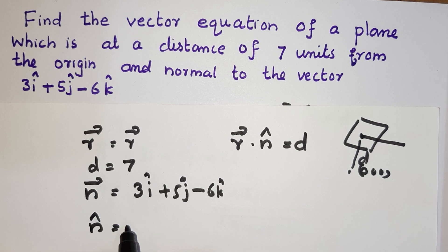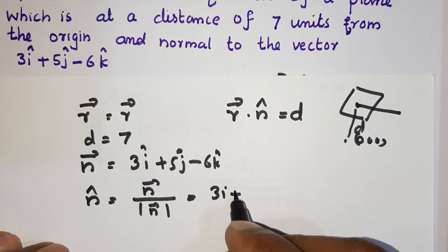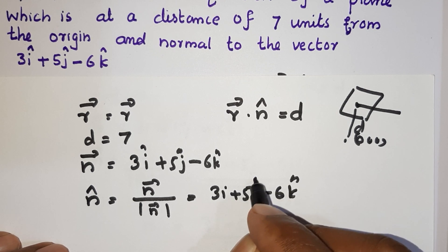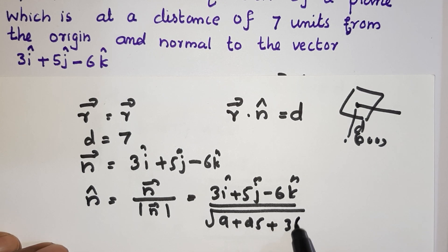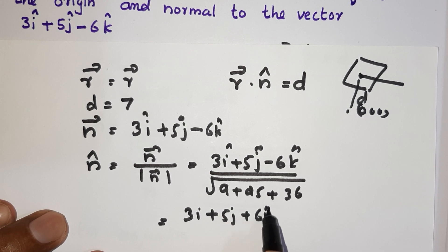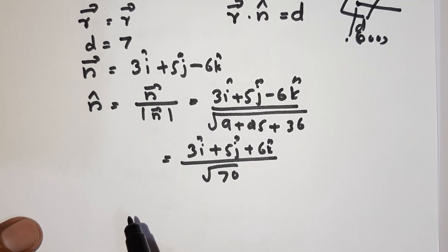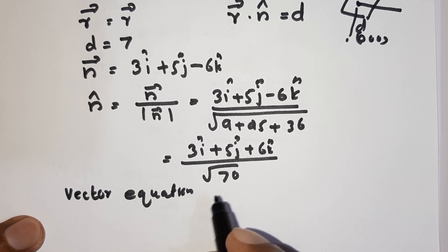Vector r dot n hat equals d, where n hat equals the vector n divided by magnitude of n. That's 3i plus 5j minus 6k divided by root of 3 squared plus 5 squared plus 6 squared, which equals 3i plus 5j minus 6k divided by root of 70.